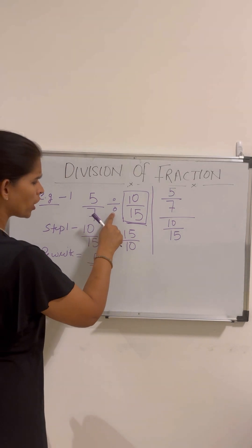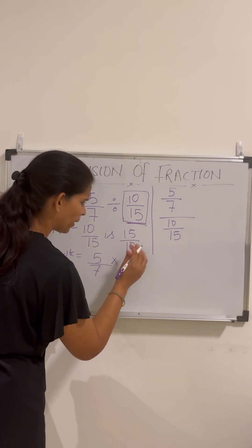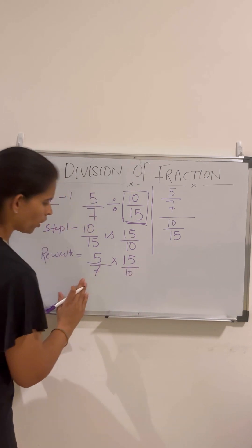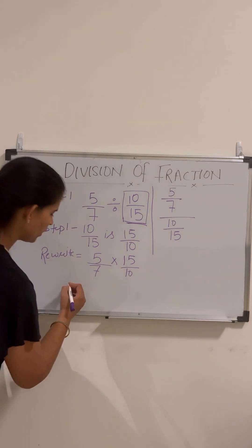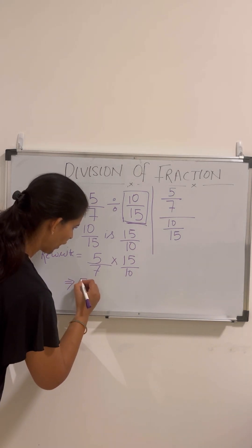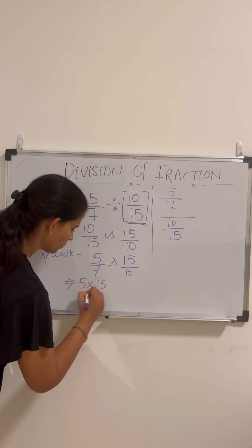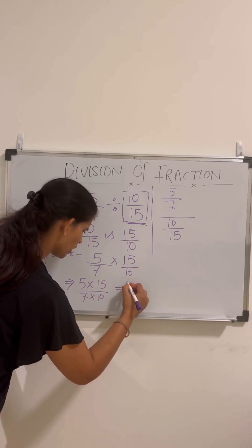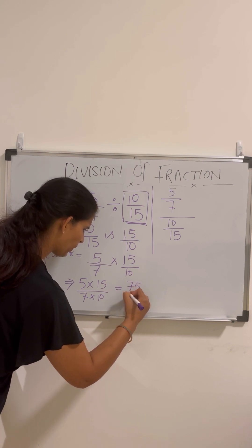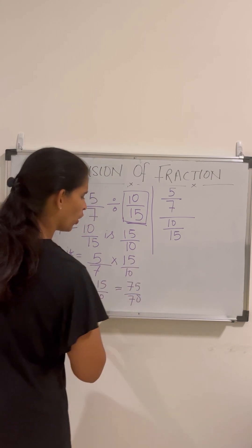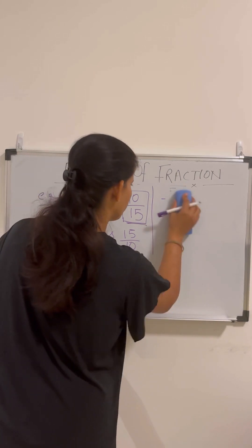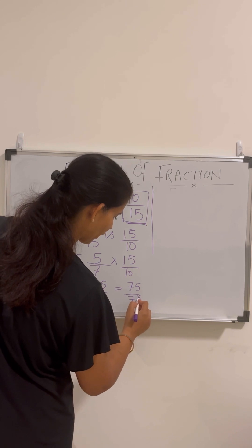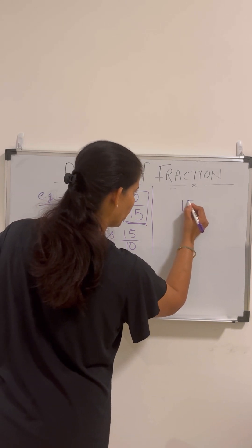Now we change divide into multiply: 5/7 multiplied by 15/10. We multiply numerators and denominators: 5 × 15 = 75, and 7 × 10 = 70, giving us 75/70. We can reduce this — the common factor is 5 — so the result is 15/14.